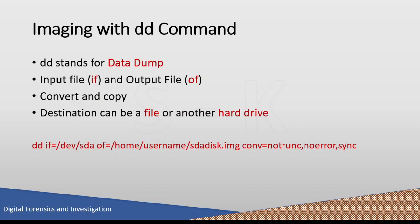Additional parameters can be used with DD. The 'notrunc' option tells DD not to truncate the output if an error is encountered. The 'sync' option tells DD to place zeros in any blocks in the output file when an error occurs. The 'noerror' option tells DD not to stop duplicating when an error is encountered. The default block size, as discussed in the previous session, is 512 bytes, representing one sector size.